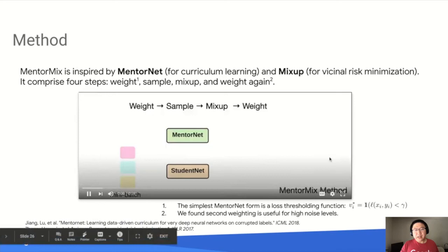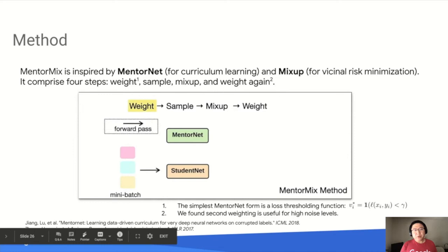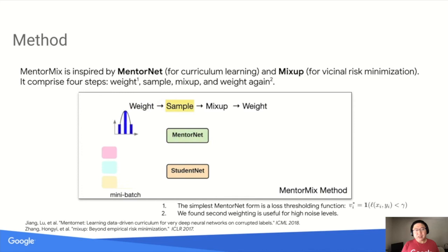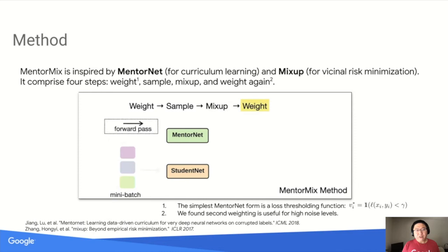Let's look at this animation. In the first step, we employ a Minternet to compute example weights for each example in a mini-batch. After getting the weights, we normalize them into a distribution. In the second step, for each example in the mini-batch, we sample a different example according to the distribution just built, then mix up the original example with the newly sampled example to form a new mix-up example. In the last step, we feed this new example to our model to get the loss, weight it, and compute the weighted loss. The weighted loss is used in back-propagation to train the model.